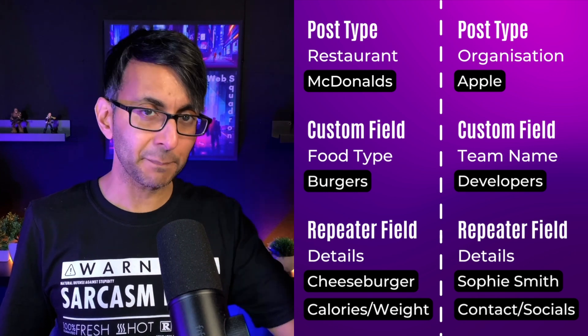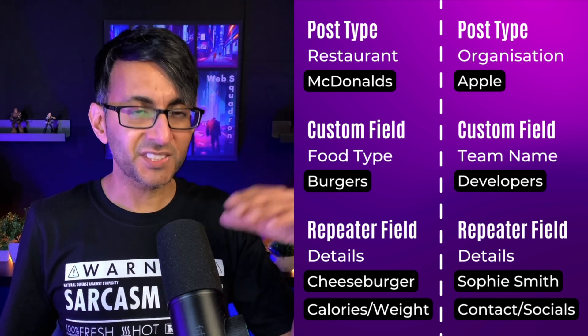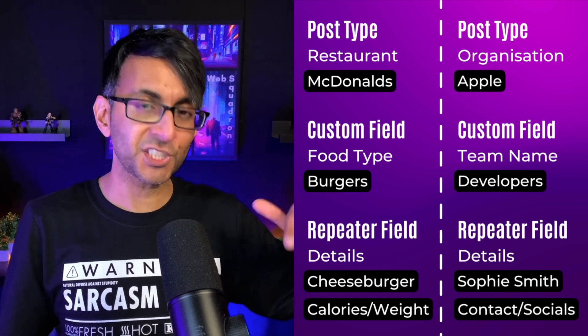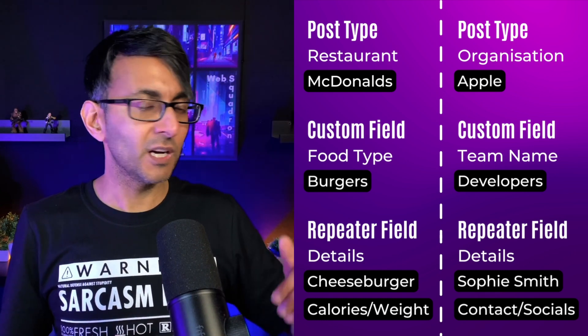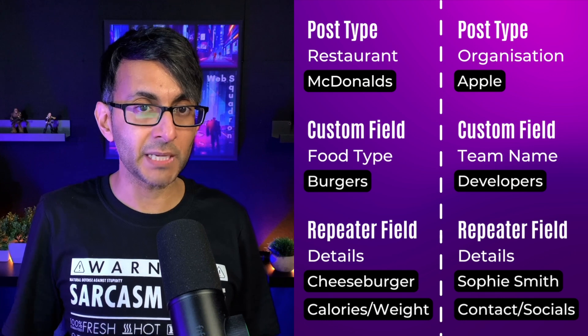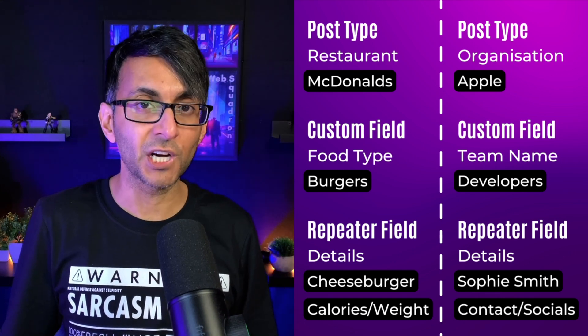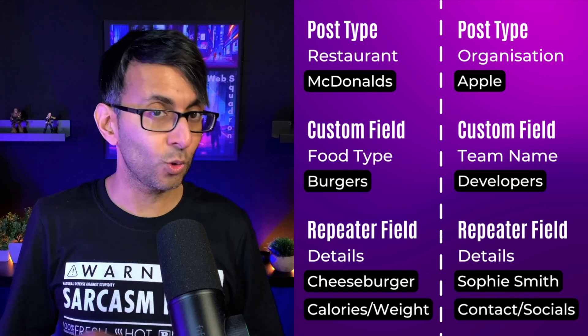On the other side, with Apple, the team name is the custom field. When you pick that and type in 'developers,' the repeater fields kick in — maybe it's name, role, social sharing icons, contact number, and contact email address. If you then go and type in a different team name like 'designers,' again the repeater fields show. And whether there's one staff member or 20 staff members, it might chop and change — you can add in accordingly. That is the basis of the repeater field. If you want them to repeat as per a parent field, in this case the custom field is the parent and the children of that are the repeater fields.